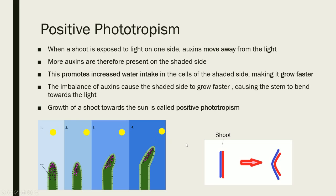If you have trouble picturing this, there's a simplified diagram with a blue side and a red side. They're equal length at the moment, but if the blue side grows faster than the red side, they're still attached and therefore it will bend overall towards the sun. The reason we call this positive phototropism is that if the plant grows towards the stimuli — in this case light — that's positive. If it grows away from the light, we call it negative.